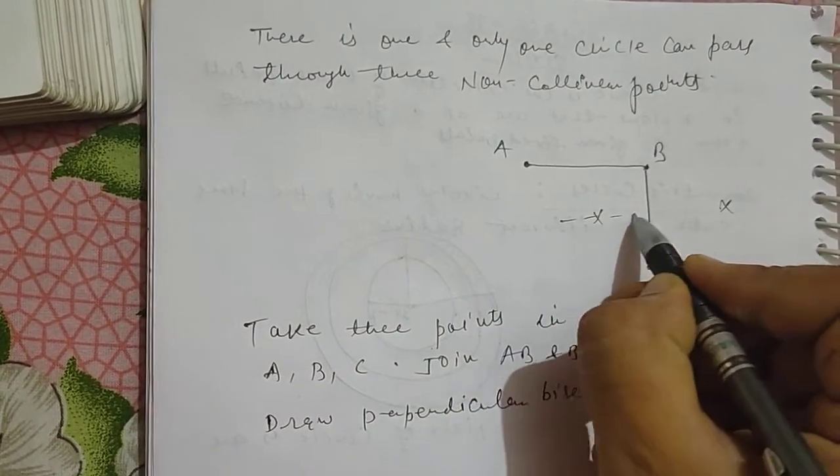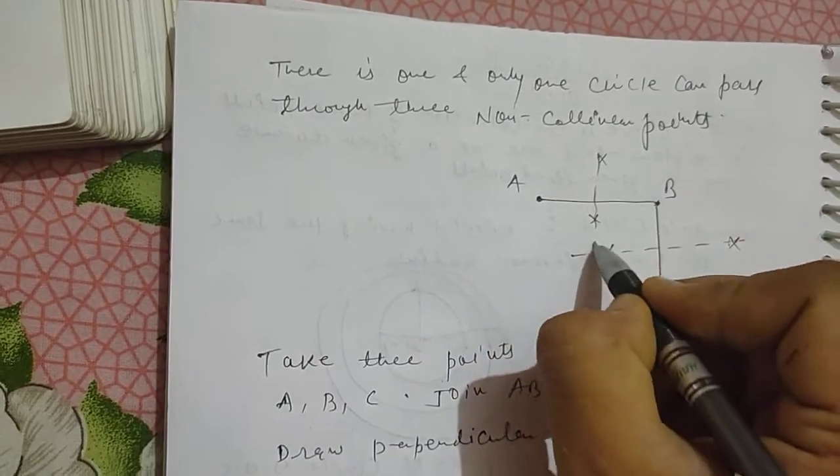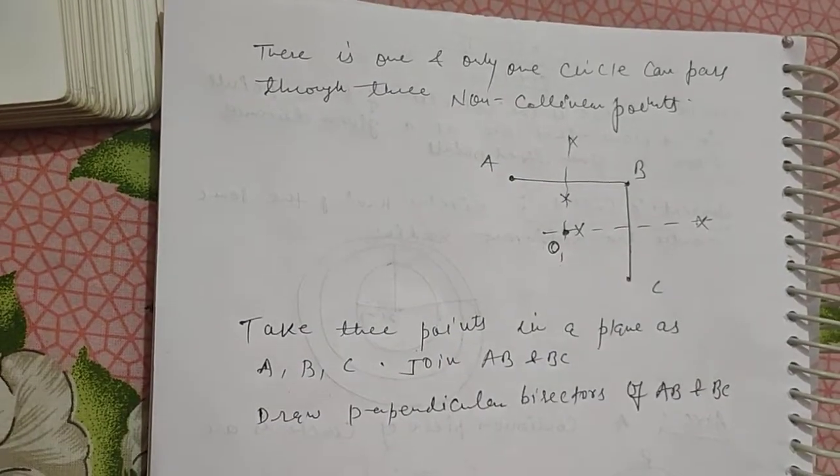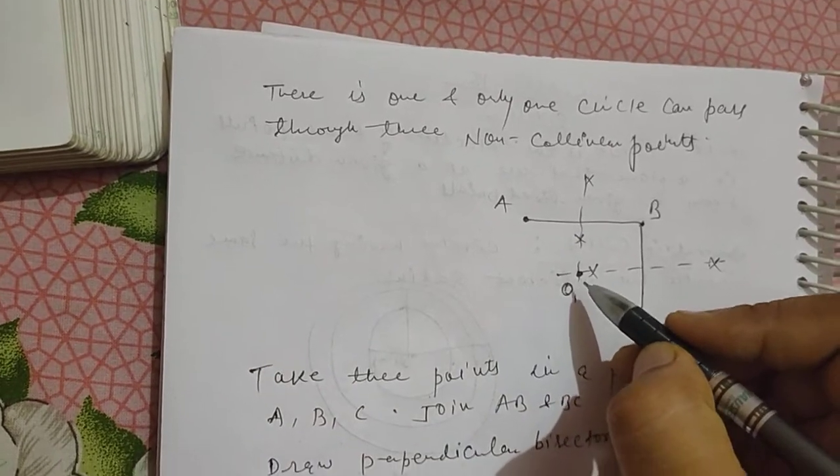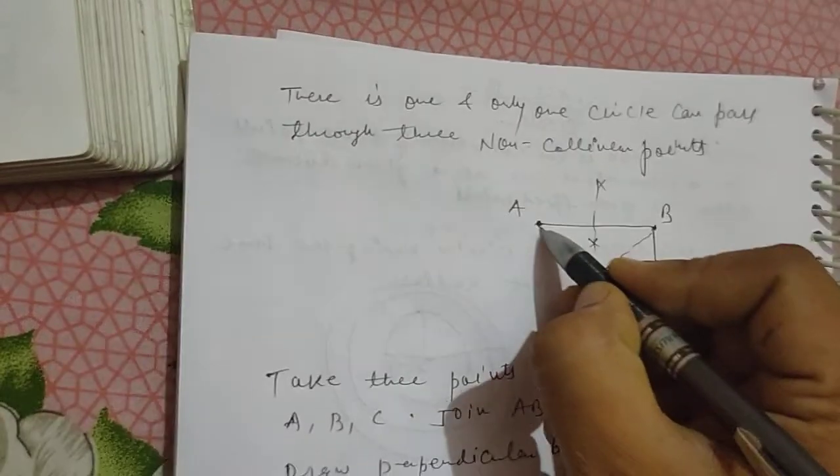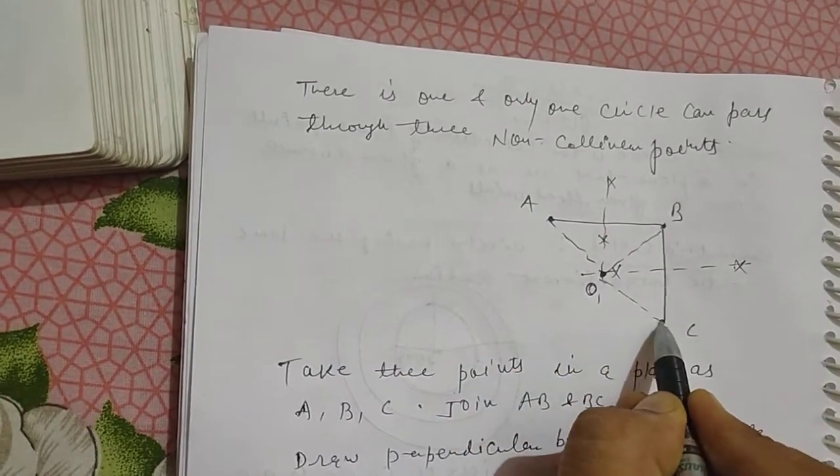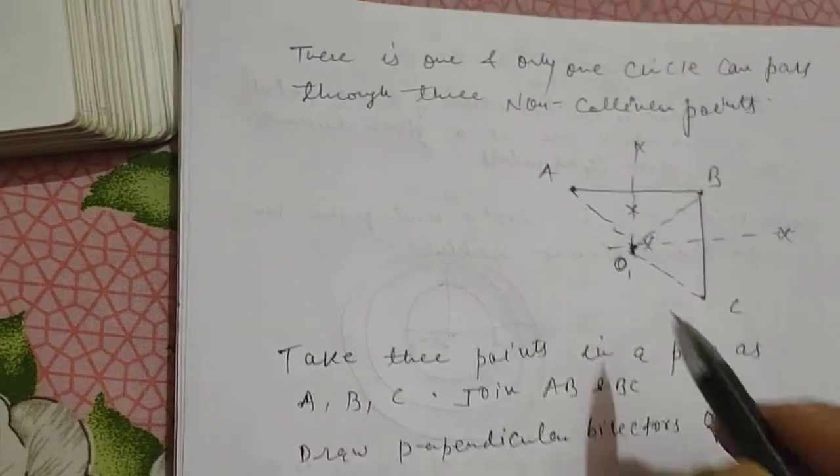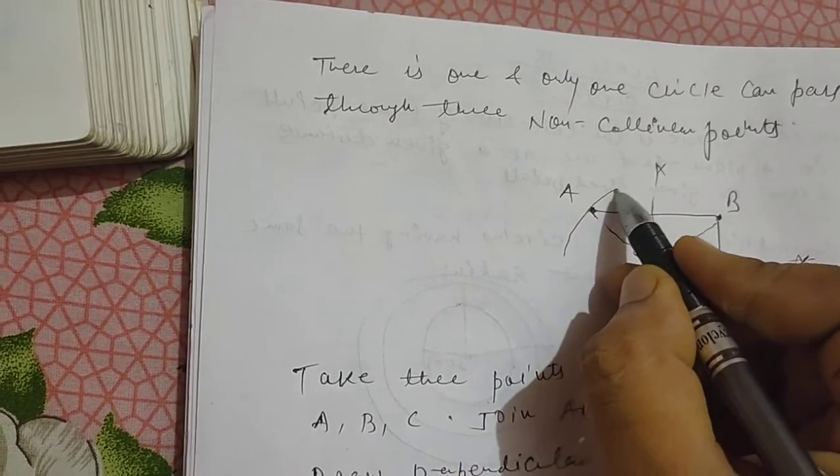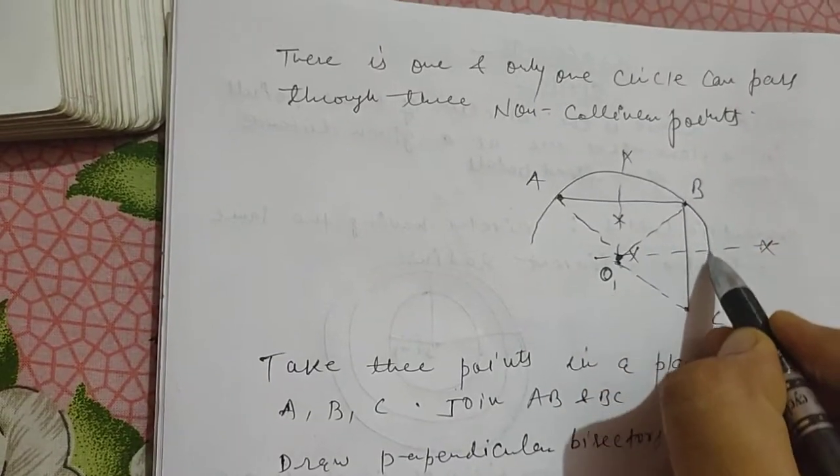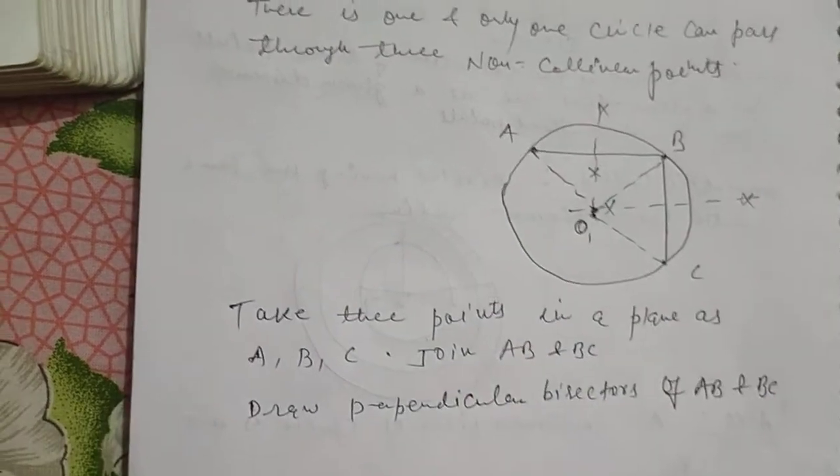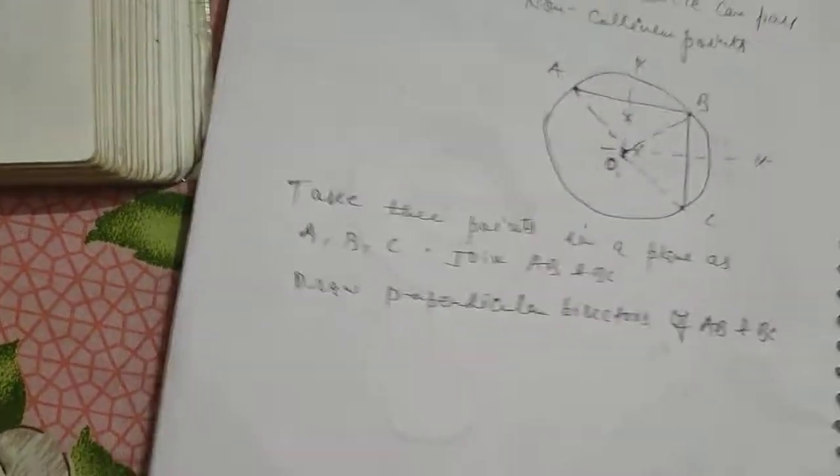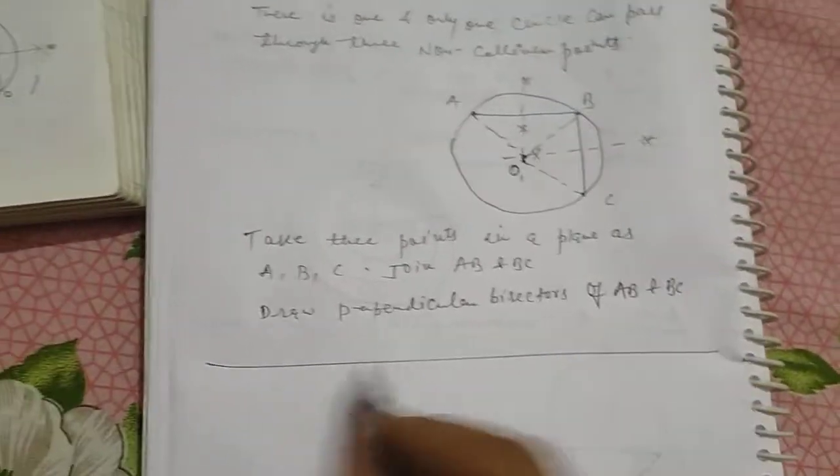Draw perpendicular bisectors of A, B and B, C. The perpendicular bisectors will intersect, and this is the clear process.